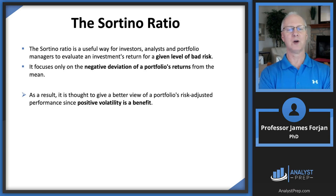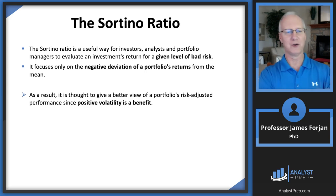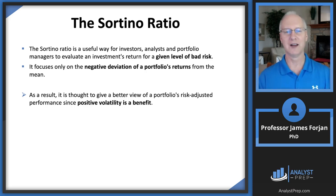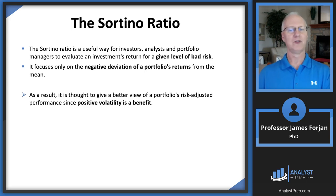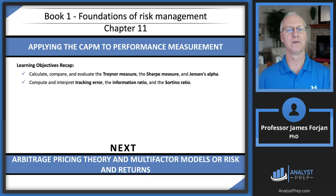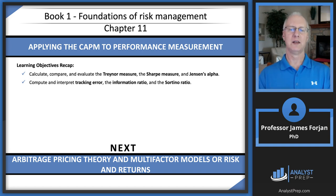That summarizes Chapter 11. We covered Treynor, Sharpe, and Jensen, as well as tracking error, information ratio, and Sortino. Next, we're going to take the Capital Asset Pricing Model, which uses just one factor, and add extra factors — continuing to build our understanding of risk management.